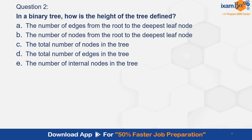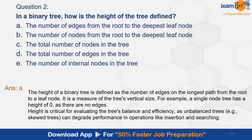Question 2. In a binary tree, how is the height of the tree defined? A. The number of edges from root to the deepest leaf node. B. The number of nodes from the root to the deepest leaf node. C. The total number of nodes in the tree. D. The total number of edges in the tree. E. The number of internal nodes in the tree. And the correct answer is A — the number of edges from the root to the deepest leaf node.